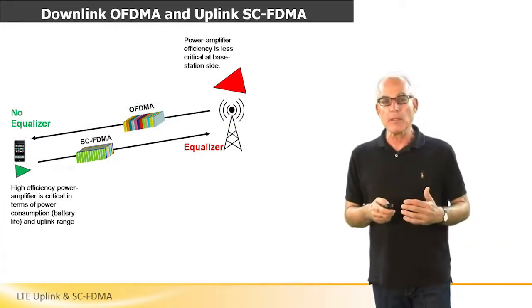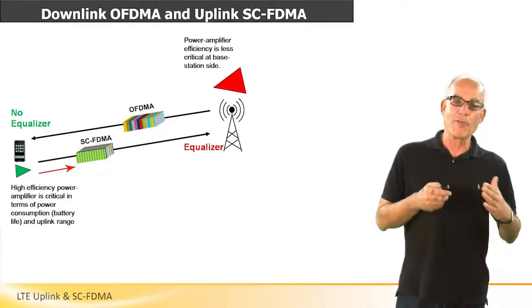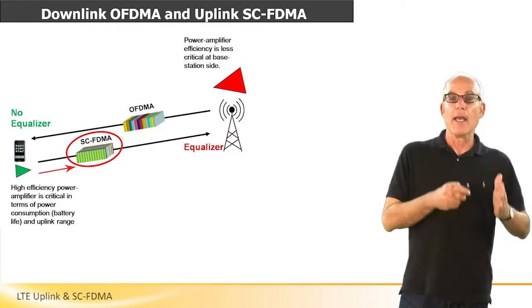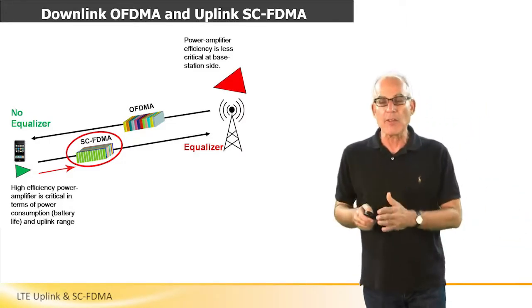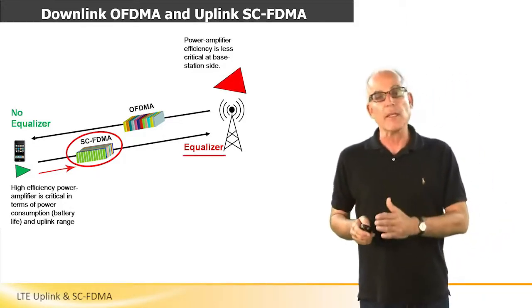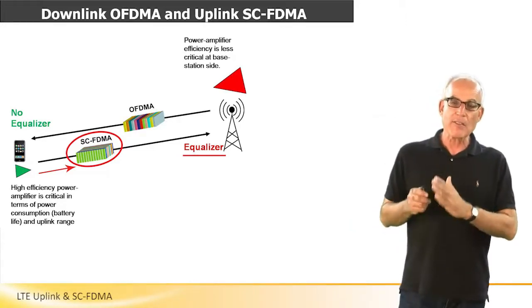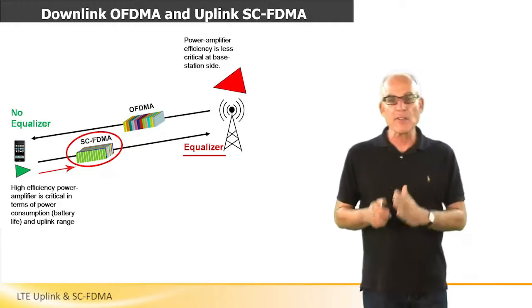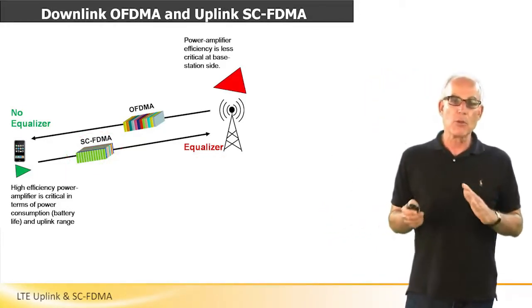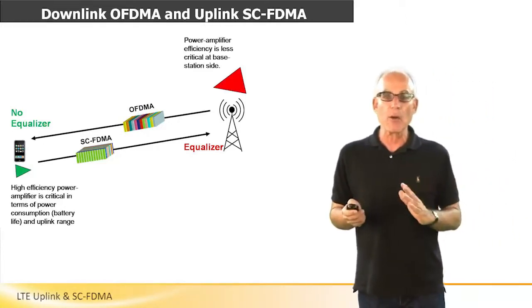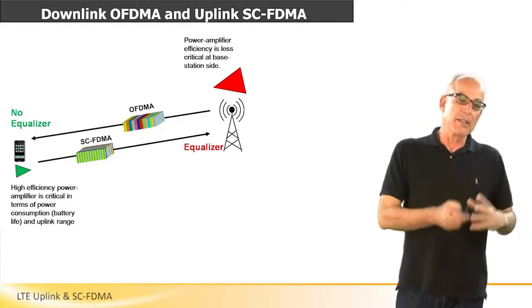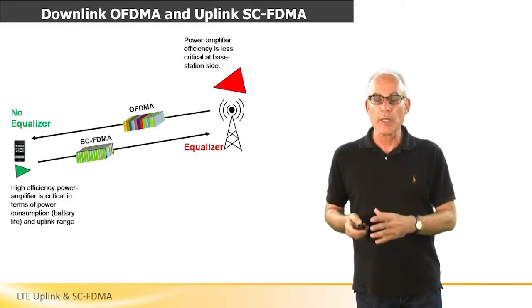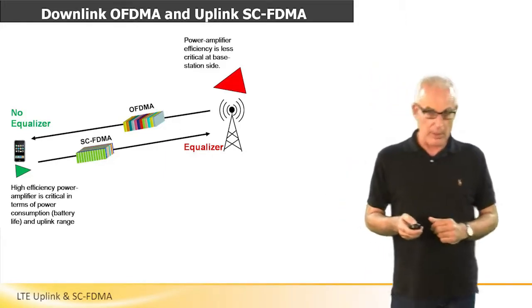For the uplink, it is very important to have a very efficient power amplifier at the handset side, so single carrier FDMA is used. At the receiver side of the uplink, which resides at the base station, an equalizer is used — but the base station is much less sensitive to cost, power dissipation, and processing power, so it can tolerate the equalizer. By having two different access modes, most of the burden in terms of power dissipation and processing power is taken from the handset and put into the base station.